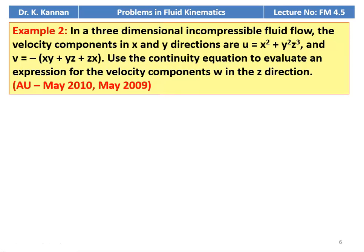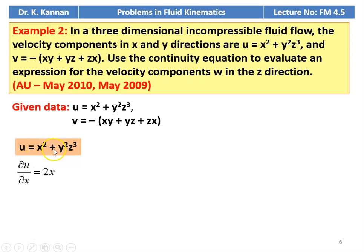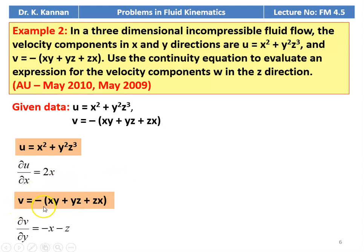Example number 2. In a three-dimensional incompressible fluid flow, the velocity components in the x and y directions are u equal to x squared minus y squared into z cubed, and v equal to minus of xy plus yz plus zx. Use the continuity equation to evaluate the expression for the velocity component w in the z direction. This is from May 2010 and November 2009 question paper. Given: u equal to x squared plus y squared into z cubed, v equal to minus of xy plus yz plus zx. From the expression for u, dou u by dou x equal to 2x. Similarly, for v equal to minus of xy plus yz plus zx, dou v by dou y equal to minus x minus z.